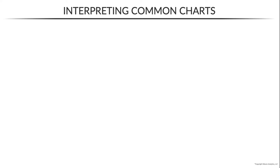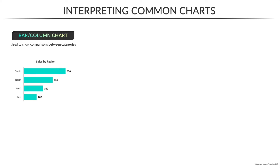One of the most common and effective visuals is the bar or column chart, which is used to show comparisons between categories. In this case, we're looking at a bar chart showing sales by region. And if we were to rotate these bars vertically, we would have a column chart showing the exact same thing. For these visuals, each bar or column represents a category, which can be compared by their height or length.